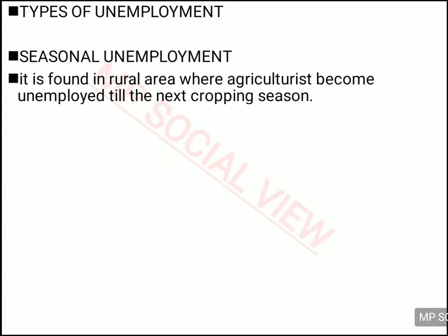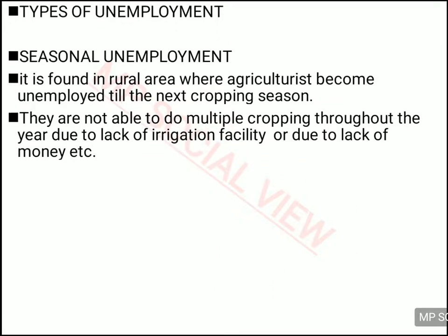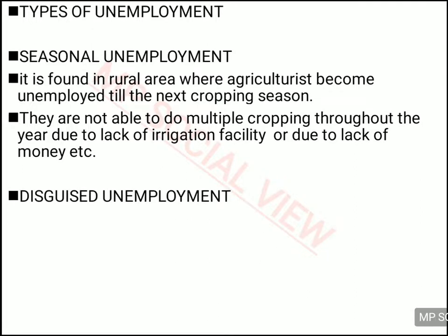Let us discuss seasonal unemployment first. During the cropping season, farmers are engaged in agricultural work. But during the non-cropping season, they become unemployed for some seasons — that is why it is called seasonal unemployment. This happens because most farmers are not able to carry out the multiple cropping system. In multiple cropping, you grow crops for two to three seasons — the Rabi season, the Kharif season, and even between October to December. But for this you need investment, irrigation, and other facilities, which most farmers lack. So for some cropping seasons they have work, and in others they become unemployed.